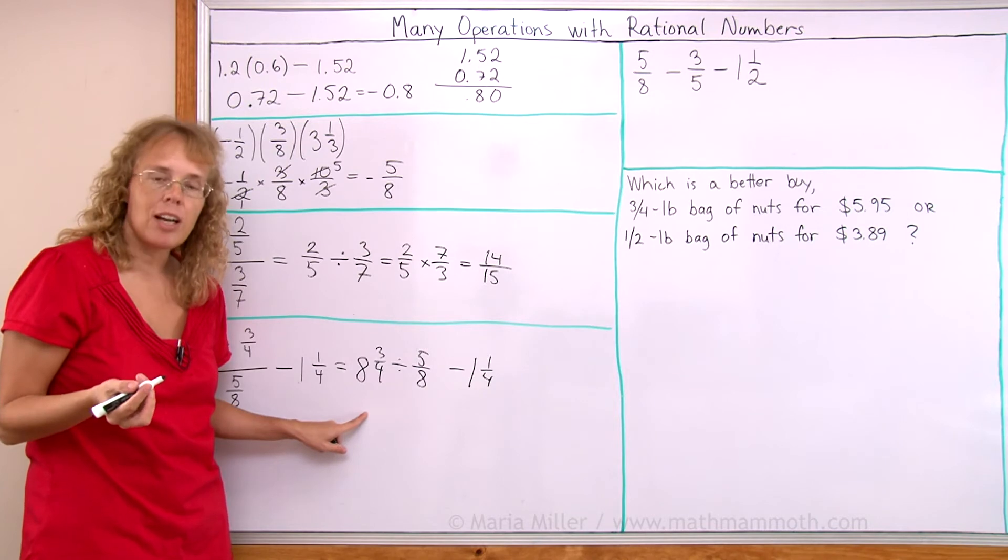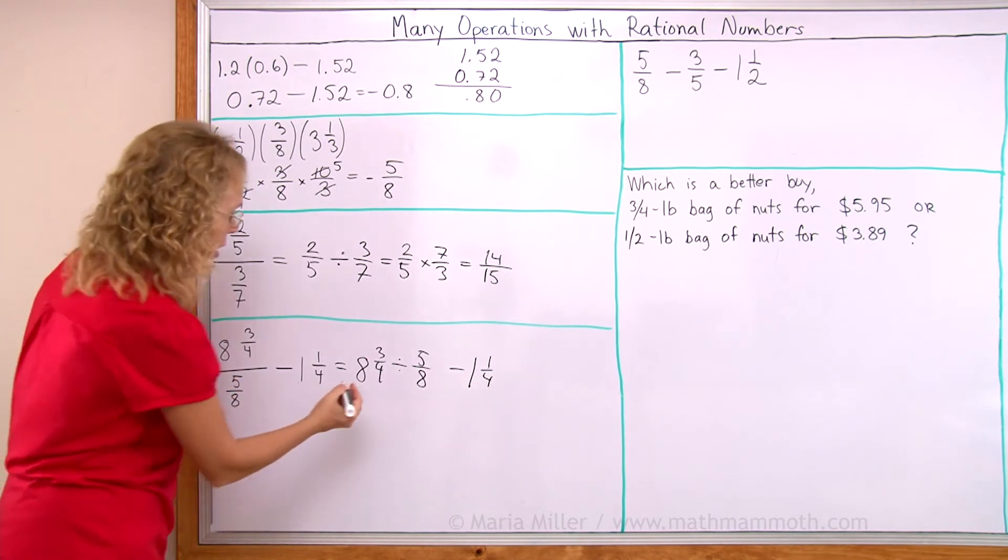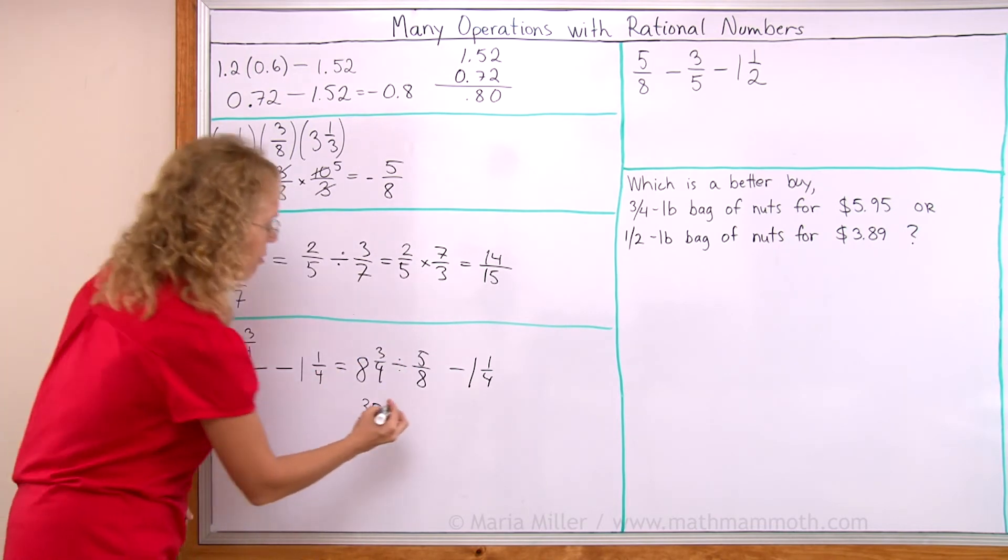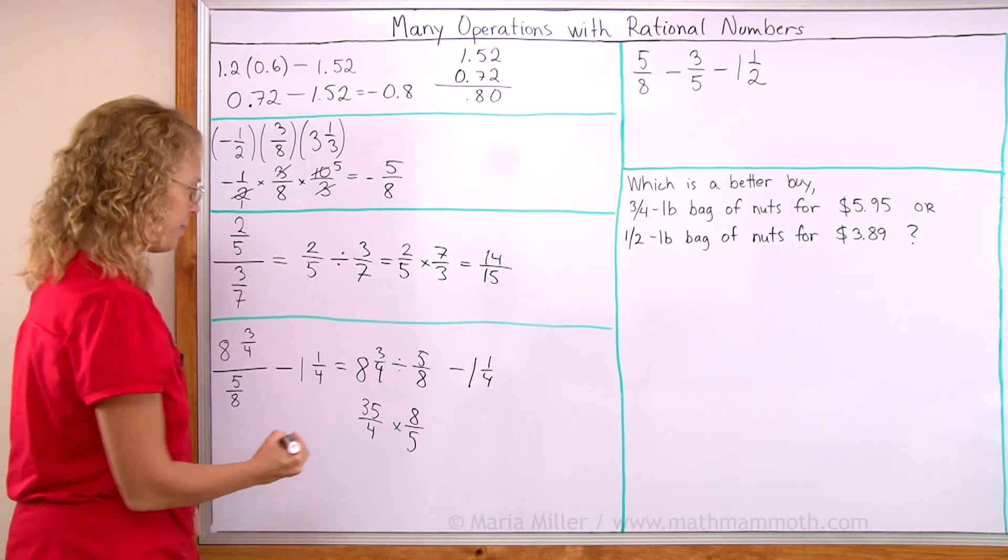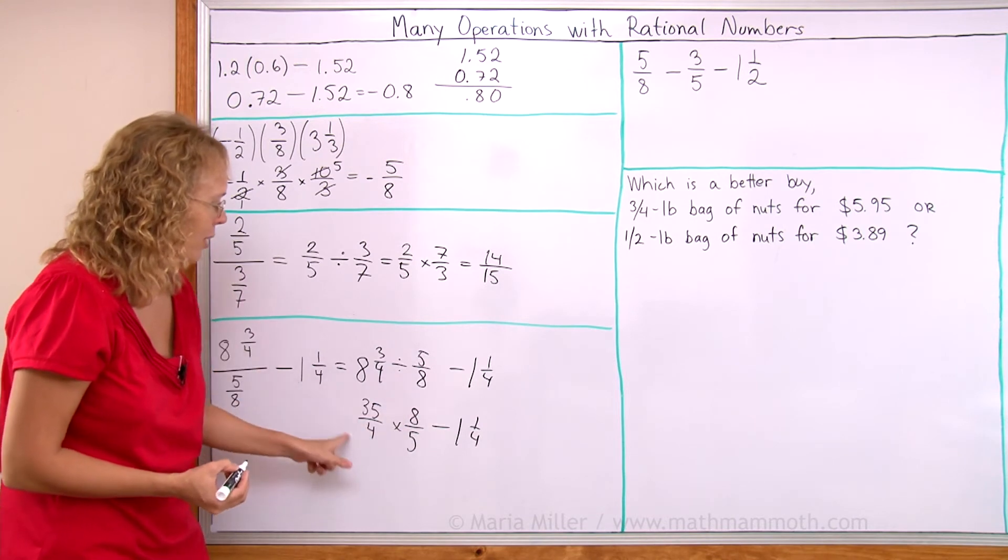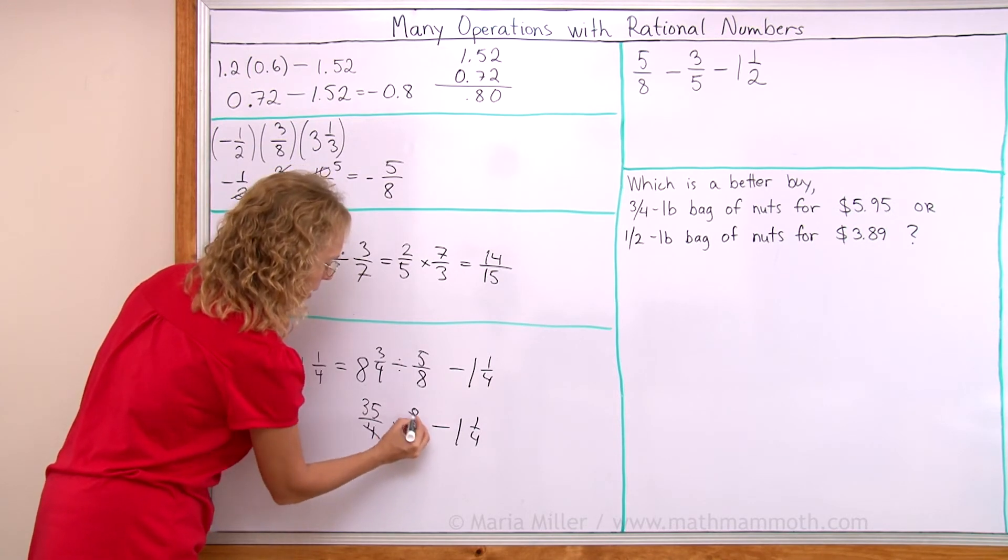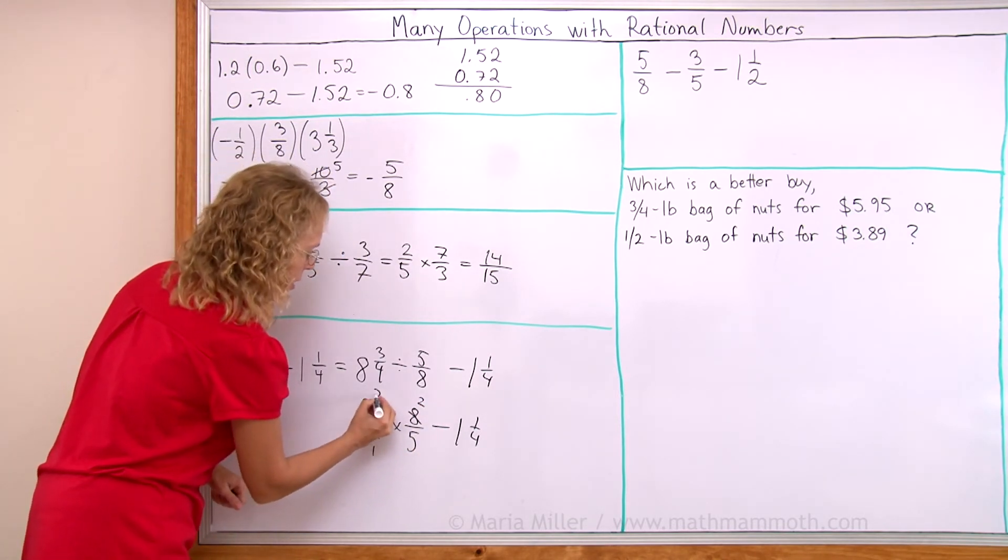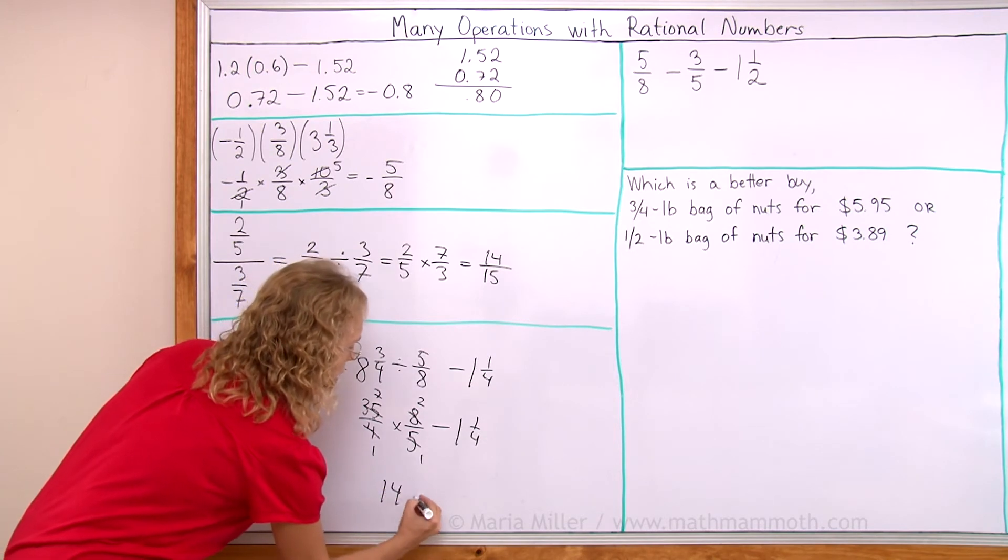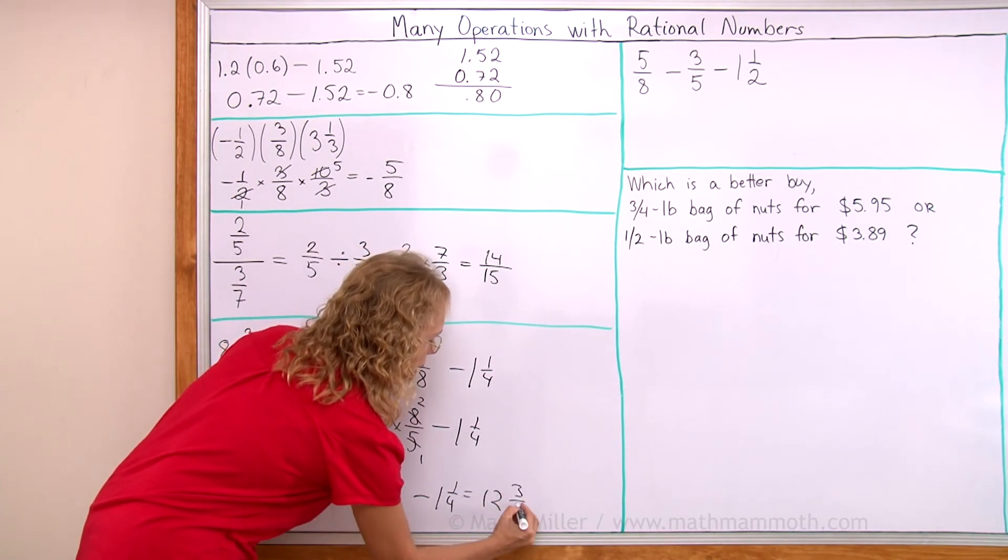And now we divide normally. This changes into a multiplication. This needs to be written as a fraction. So we get 35 fourths times, and then this we need to find the reciprocal or flip it. 8 over 5. Like that. And then there's the subtraction still there too. Don't forget that. Now here in this multiplication, I can simplify again before I multiply. There's 4 and 8. And then 35 and 5. So this actually leaves the 7 times 2. Or 14. Gives me 14. Subtract 1 and 1 fourth. So then this is 12 and 3 fourths.